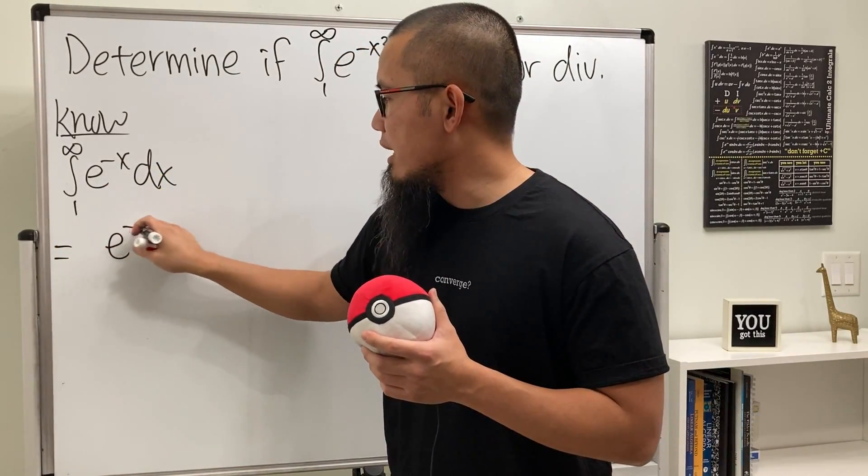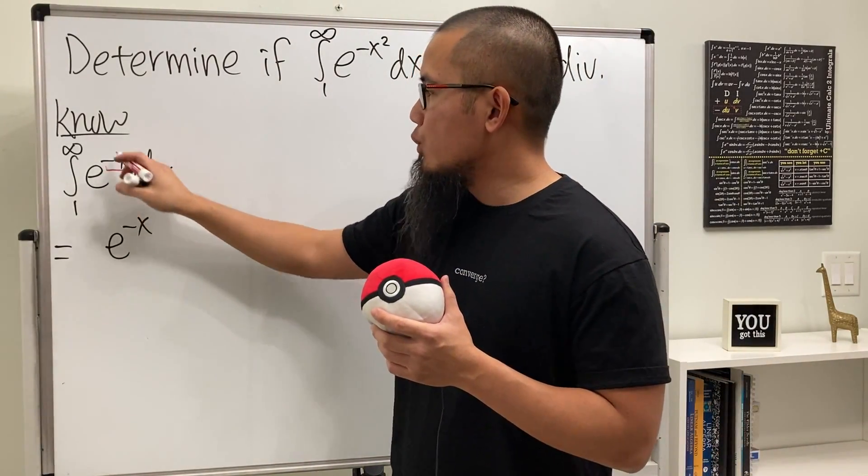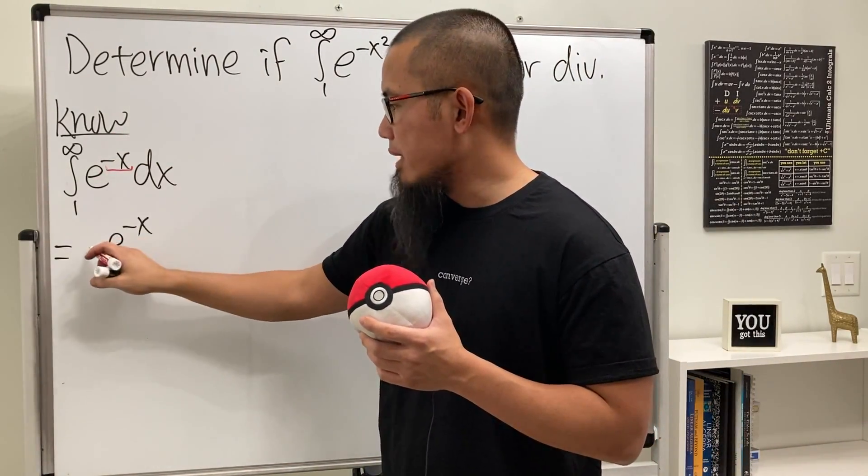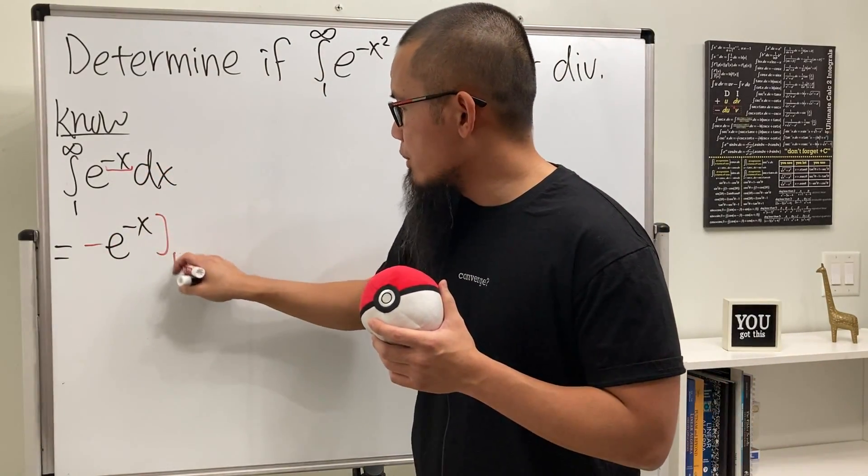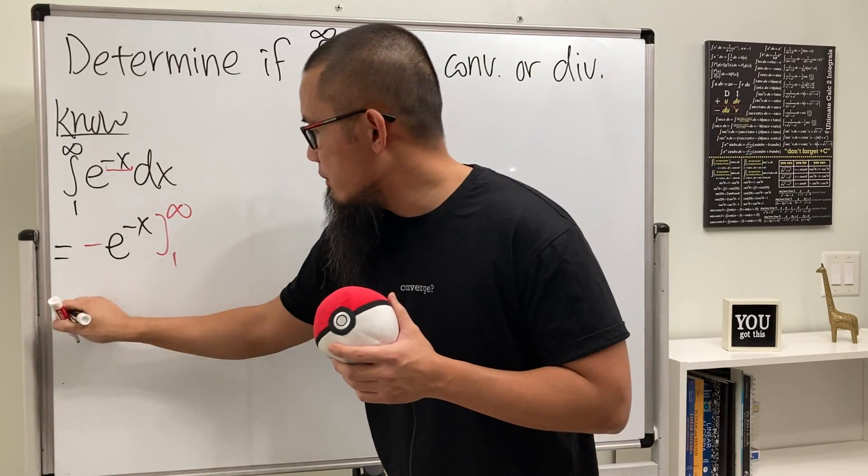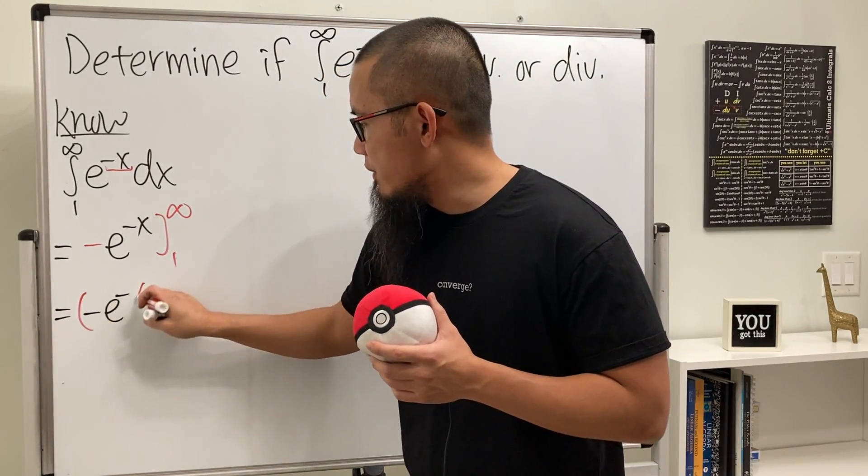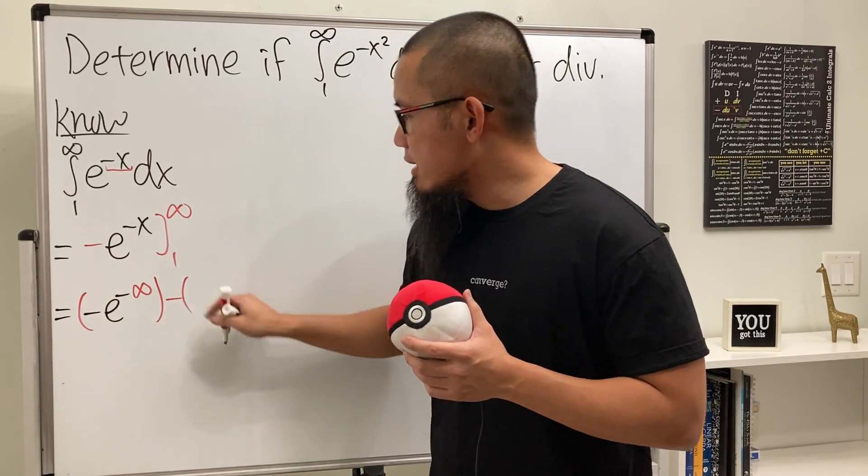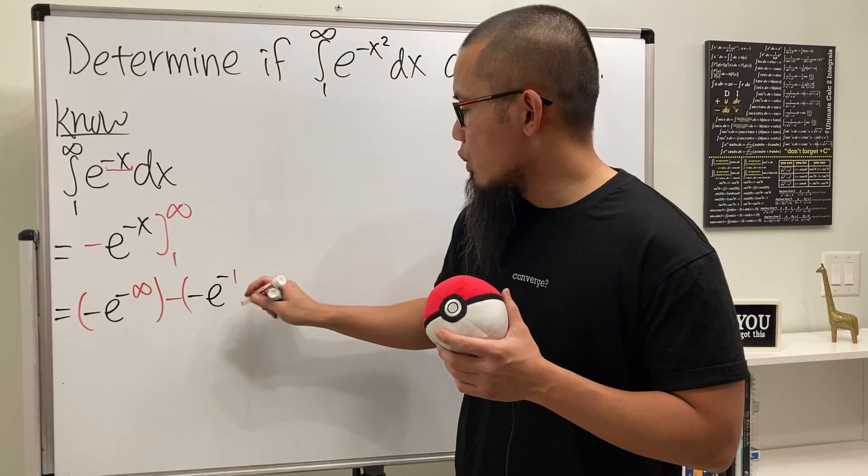Just go ahead and do the integral. e to the negative x is e to the negative x, but we have to divide it by the derivative of this, which is negative 1. So divide it by negative 1, we can put a negative like this. And then we plug in, plug in. So plug in infinity, we get negative e to negative infinity. And then we have to minus plug in 1, so we get negative e, negative 1.